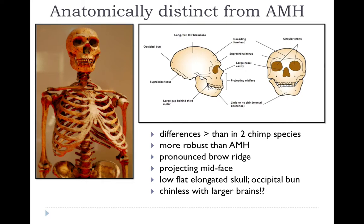Anatomically, Neanderthals are distinct from modern humans in various ways. The differences are said to be greater than those between a common chimp and a bonobo. They were much more robust and powerfully built, with a pronounced brow ridge, projecting mid-face, a low, flat, elongated skull, a bun-like swelling at the back of the head, and largely absent chin. In terms of brain size, however, they overlap with modern humans and in some cases exceed the modern human average, so they were not primitive in that regard.